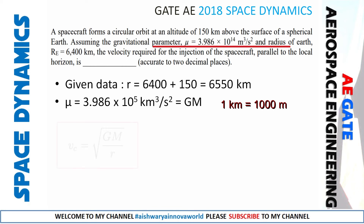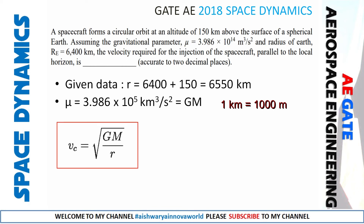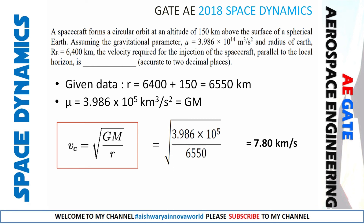Since this is a circular orbit, we apply the formula v = sqrt(GM / R) = sqrt(mu / r). Substituting mu = 3.986 × 10^5 and r = 6550, we get v = sqrt(3.986 × 10^5 / 6550) = 7.80 km/s. Accurate to two decimal places, the answer is 7.80 km/s. In m/s, this would be 7800.96 m/s.